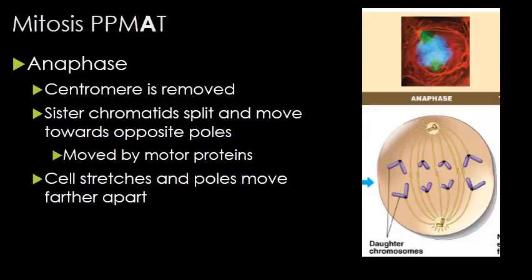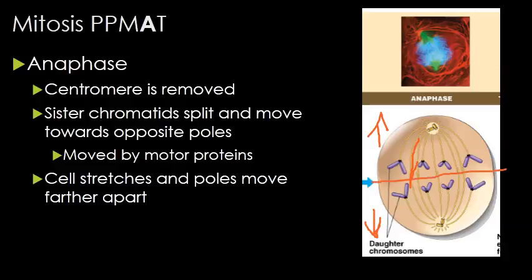In anaphase, the centromere is removed by enzymes that cut the proteins holding the sister chromatids together, so they split and move towards opposite poles. Some microtubules are also pushing against each other, causing the cell to elongate outwards and increasing the speed of travel. The cell stretches, the poles move, and everything separates from where they were at metaphase.